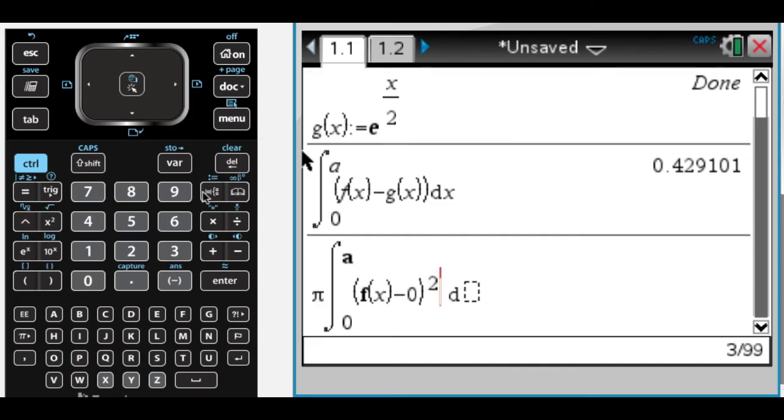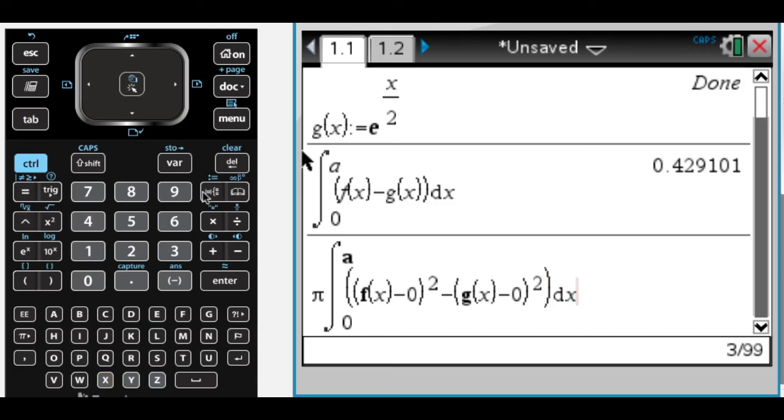So that's outer minus axis squared minus. And then it's going to be the inner curve, so the one that's closer to the axis, minus the axis squared. And then dx. And get that. So I'd write my answer, 4.267. That's what I would write, because I'm just used to rounding.